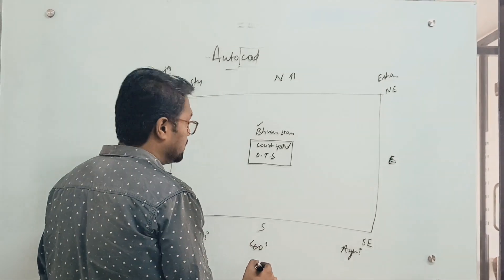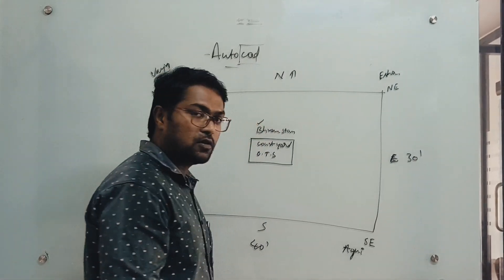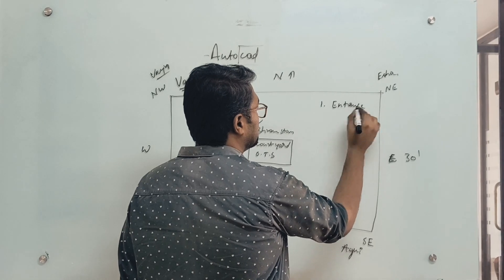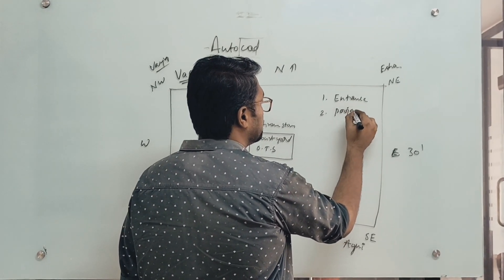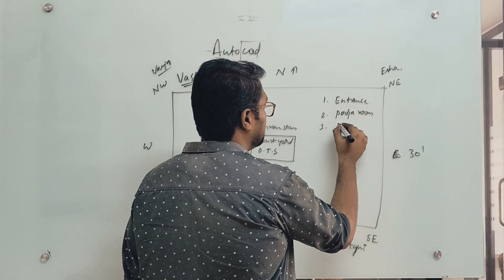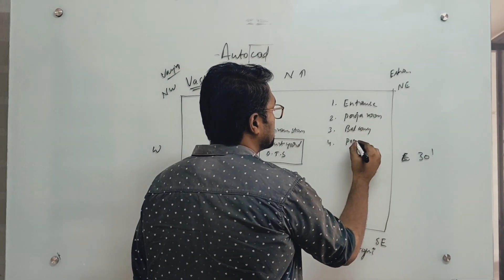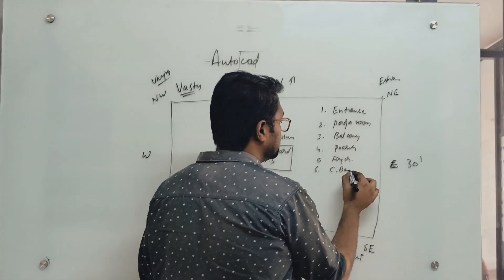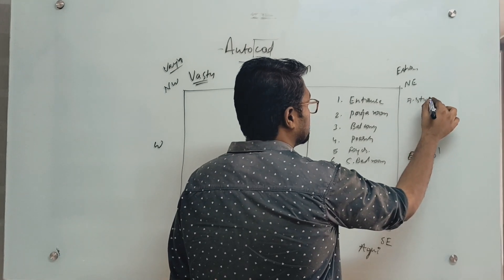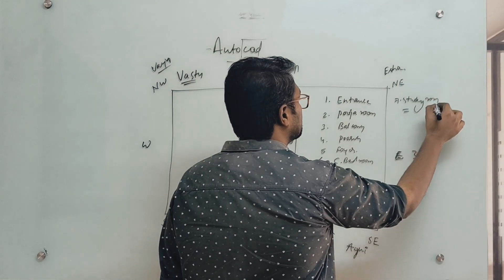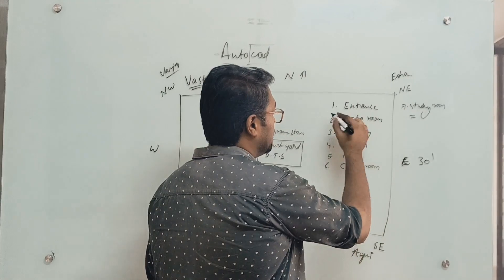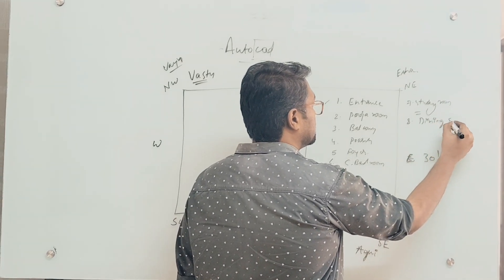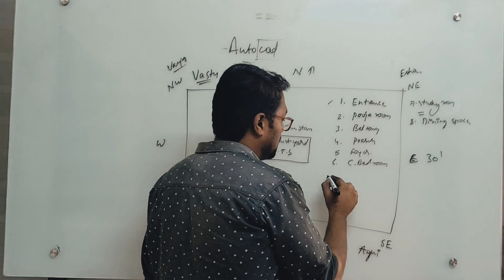Now I have a site of 40 feet by 30 feet and I want to make a plan. First, in the north direction I can give an entrance. Second option is a puja room, third option is bathroom, next a porch, foyer, children's bedroom, and study room. Coming to the east, we can also give an entrance and a dining space. Coming to the southeast corner, first preference would be kitchen, second preference would be toilets, third stairs, fourth utilities.